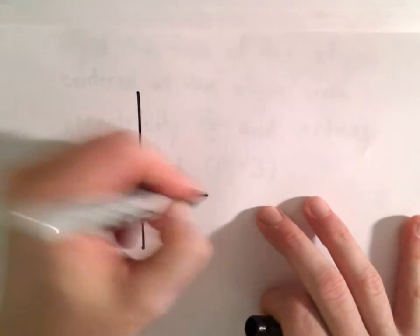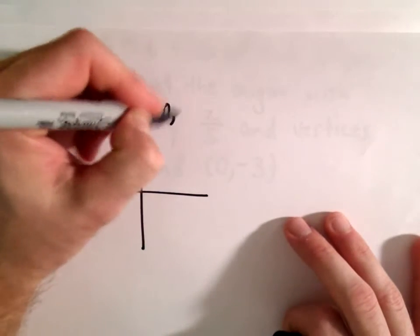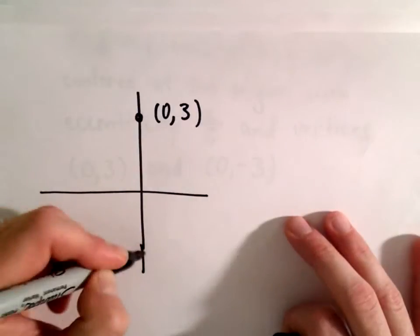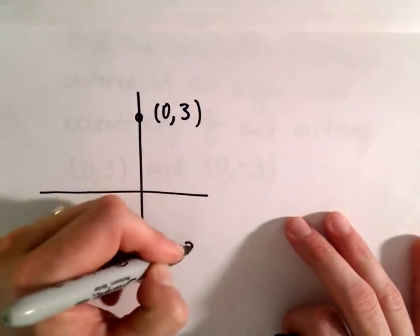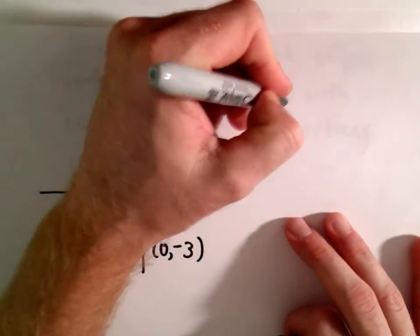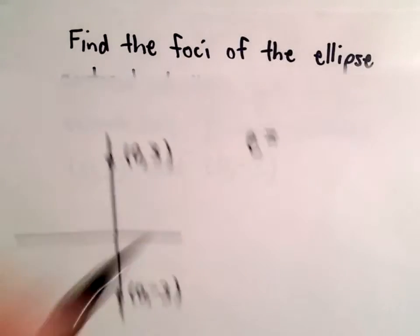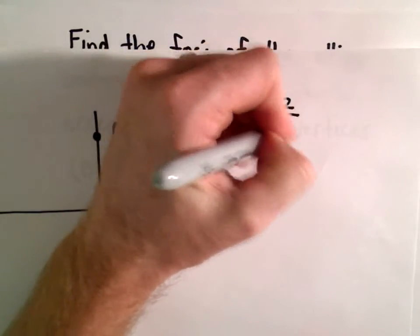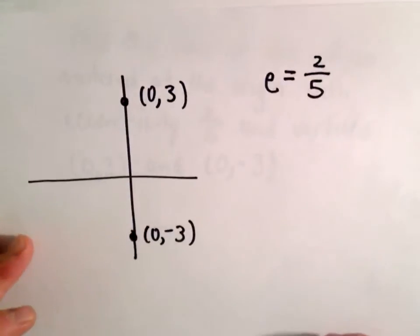So, let's see, the vertices are at (0, 3) and at (0, -3). Again, we're told that the eccentricity equals 2 over 5, and we're trying to find the foci.